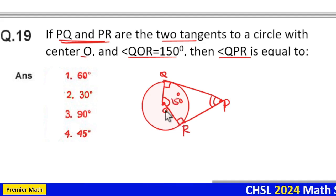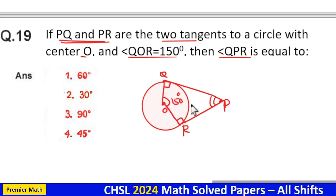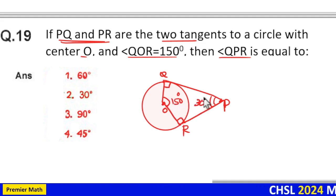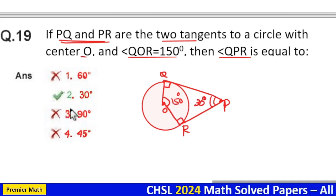So these two are 180, and this is 150. So this should be 30 degrees. 150 plus 30 is 180 degrees. So option two is your answer.